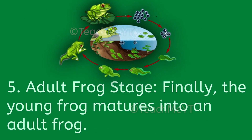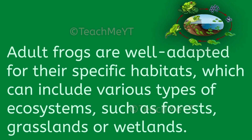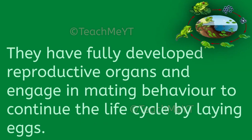Number 5: Adult frog stage. Finally, the young frog matures into an adult frog. It reaches its reproductive age and its body proportions become fully formed. Adult frogs are well adapted for their specific habitats, which can include various types of ecosystems such as forests, grasslands, or wetlands. They have fully developed reproductive organs and engage in mating behaviour to continue the life cycle by laying eggs.